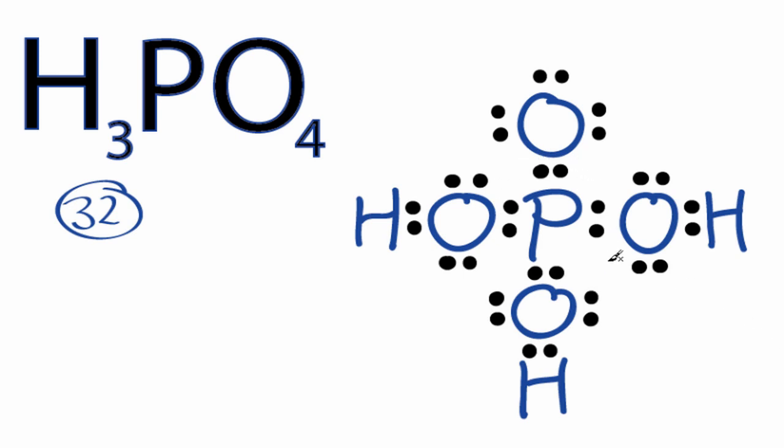However, we really need to look at our formal charges. Phosphorus here is below period 2 on the periodic table, that's row 2, and that means that it can have an expanded octet, more than 8 valence electrons. So let's take a look and see what our formal charges are for H3PO4.